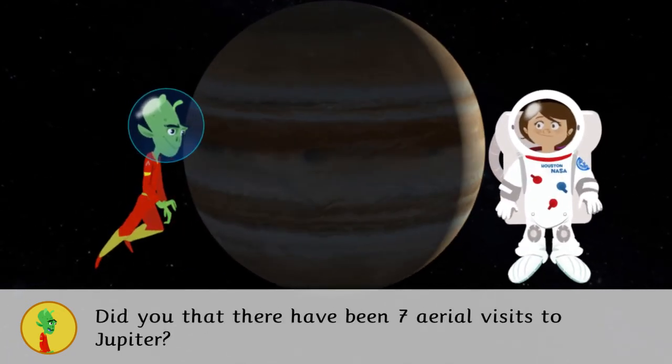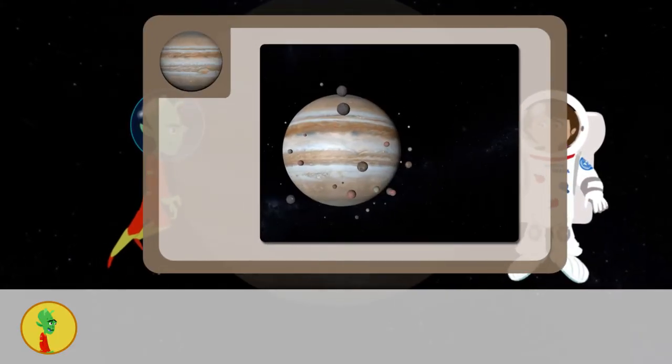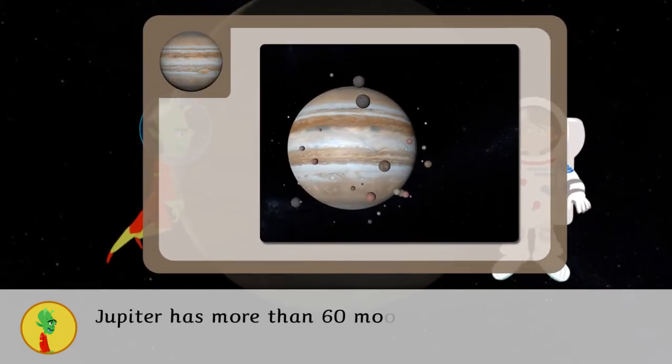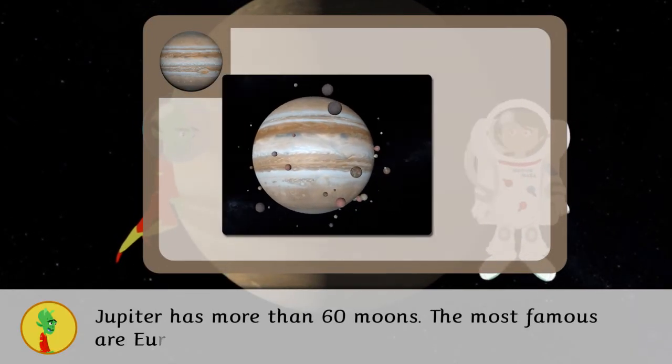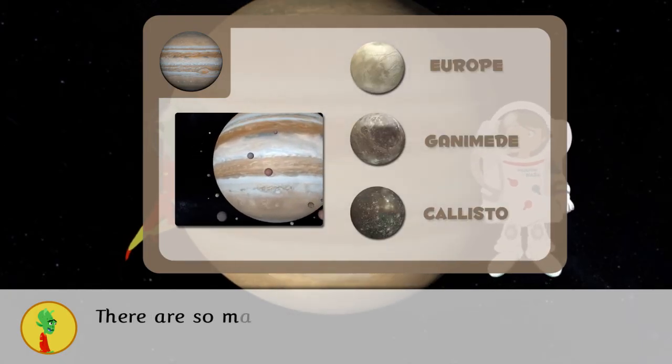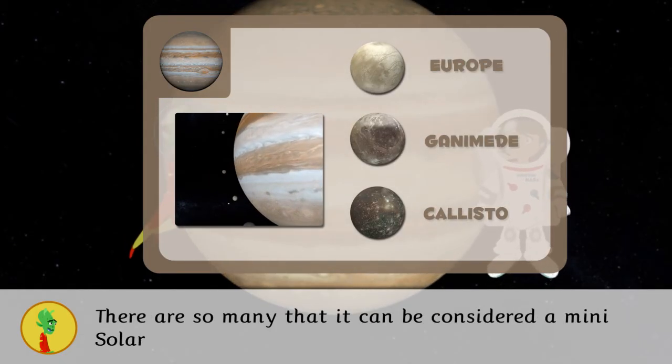Jupiter has more than 60 moons. The most famous are Europa, Ganymede, and Callisto. There are so many that it can be considered a mini solar system.